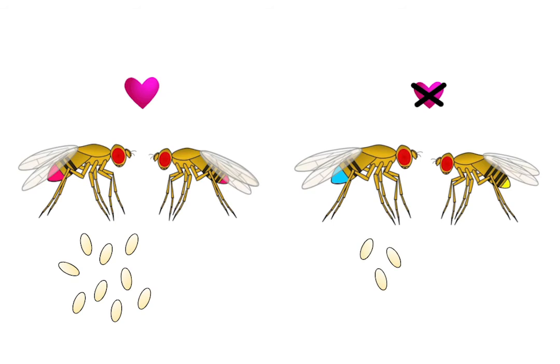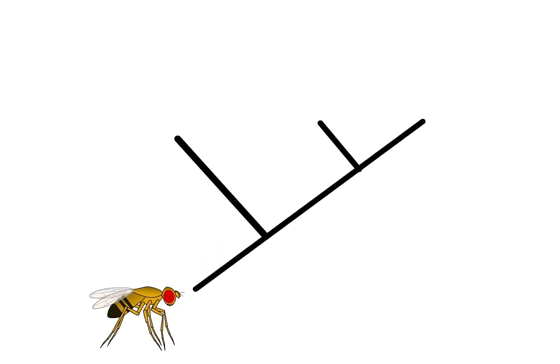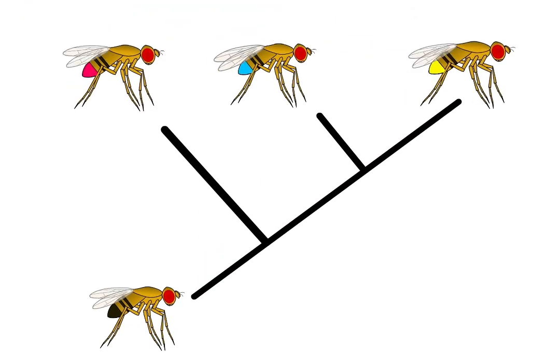Ultimately, that female will pass on fewer of those males' genes and fewer of her own genes to her pool of offspring, helping to reinforce mating among individuals with complementary reproductive traits. As time goes on, the genes in different populations of flies will diverge more and more, and as a result, the effects on the development of individuals in those populations will also diverge. Given enough time and enough change, entirely different species can form.